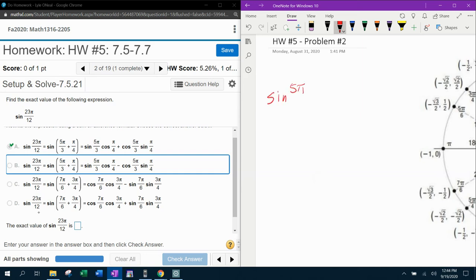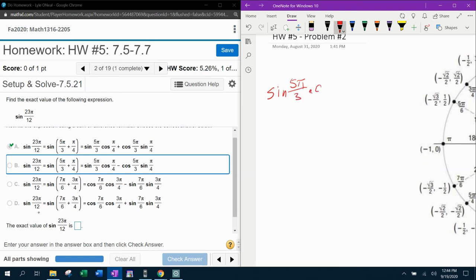Knowing that we've got the sine of 5π over 3 times the cosine of π over 4 plus the cosine of 5π over 3 times the sine of π over 4.